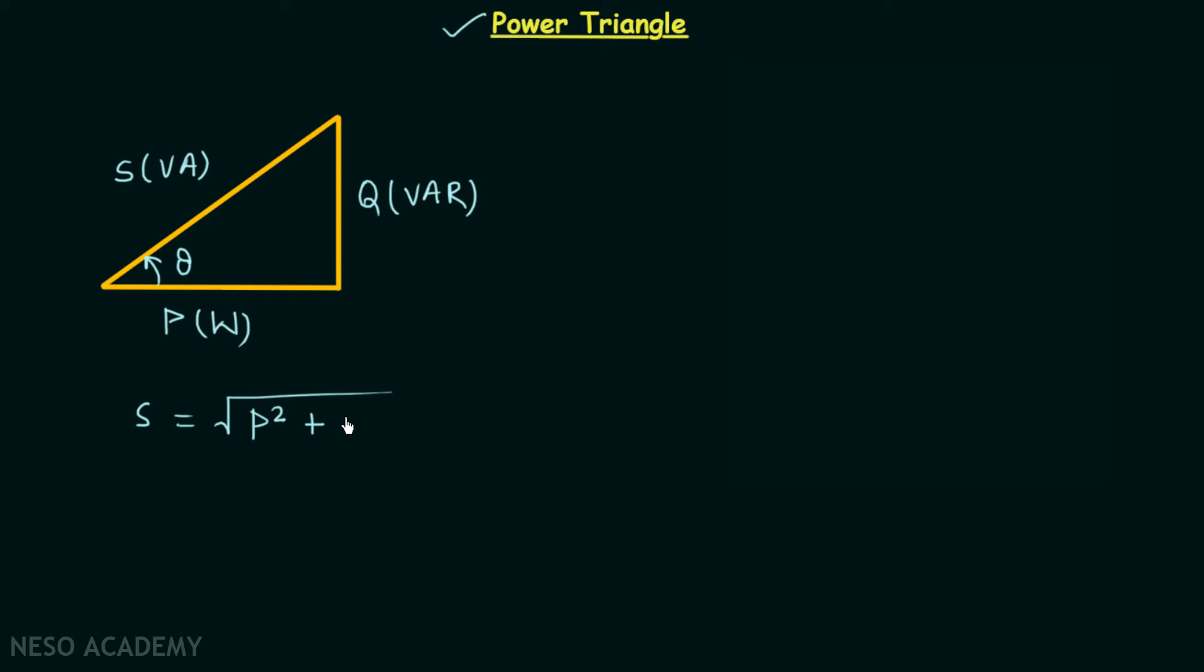Square of P plus square of Q and we know apparent power is equal to the magnitude of the complex power. And from this triangle the power factor cos theta will be equal to the real power divided by the apparent power. And we can have sine theta as well. It will be equal to the reactive power divided by the apparent power.